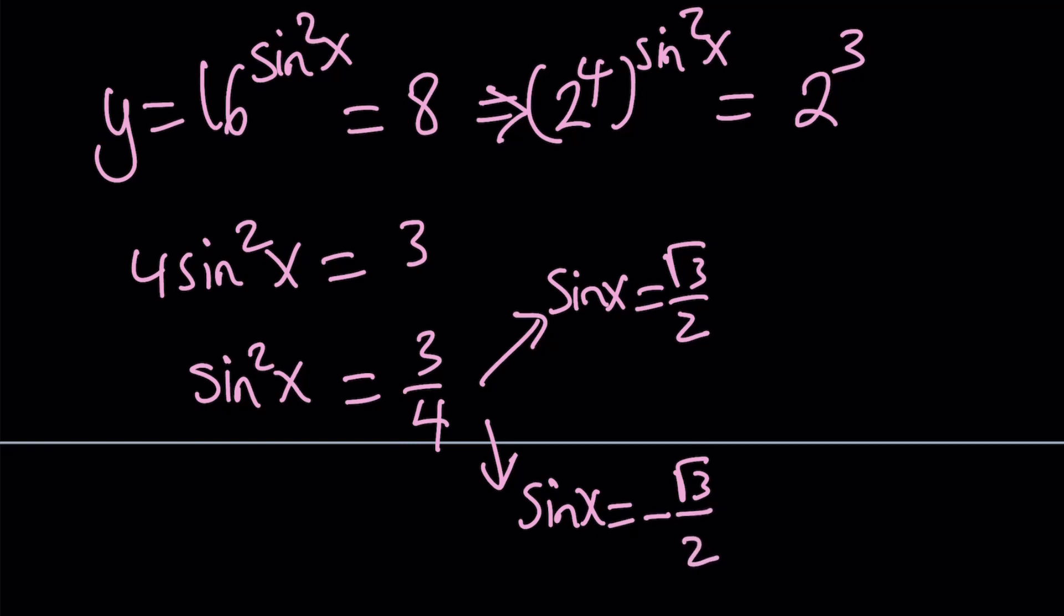And from here we get the following solutions between 0 and 2π. Root 3 over 2 is π/3, which is 60 degrees. Sine 60 degrees is the same as cosine 30 degrees. So this is π/3, or you can subtract it, π minus that, which is 2π/3.